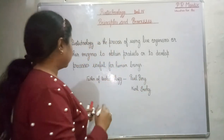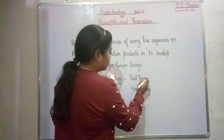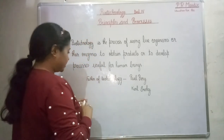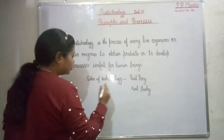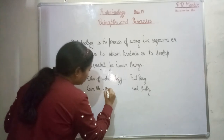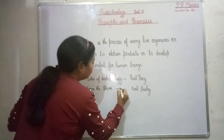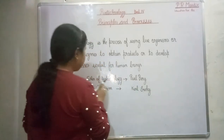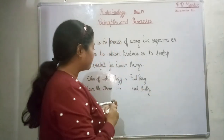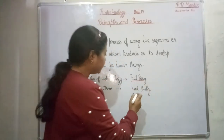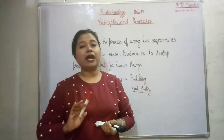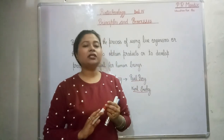The father of biotechnology was Falsberg. Falsberg is known as the father of biotechnology, and Karl Arki was the first to coin the term biotechnology. You need to remember these two names: Falsberg, who is the father of biotechnology, and Karl Arki, who first coined the name biotechnology.